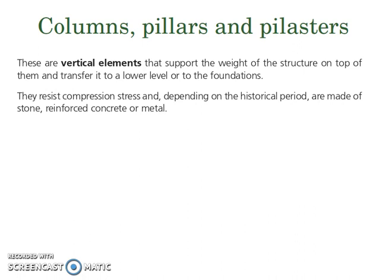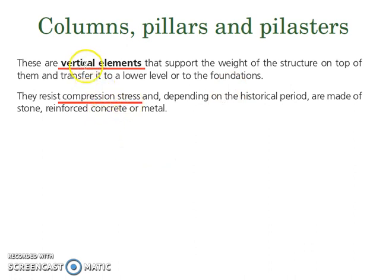Columns, pillars and pilasters. The first property about these elements is that they are vertical elements that support the weight of the structure and transfer the weight to a lower level or directly to the foundations. The second property is that they resist compression stress. They are vertical and they resist compression stress. Depending on the historical period, they are made of stone in ancient times, or reinforced concrete or metal.